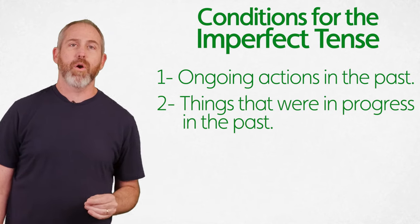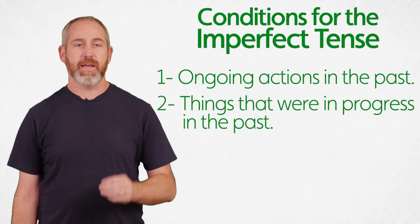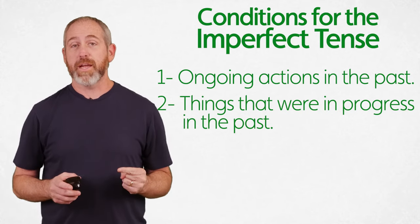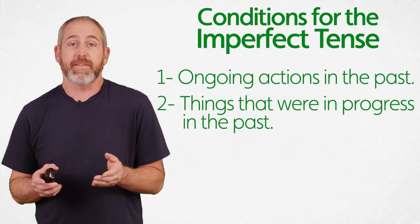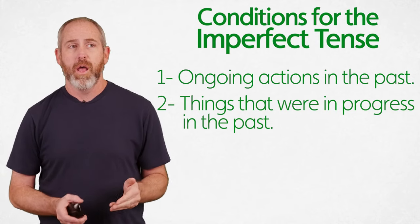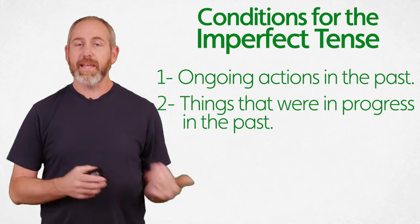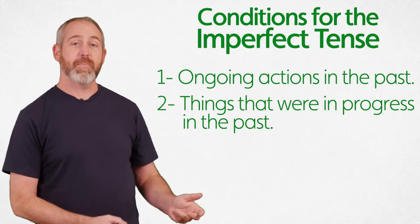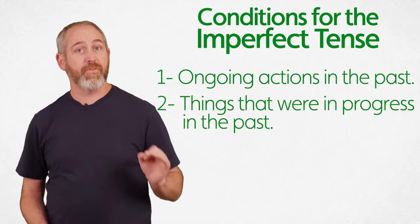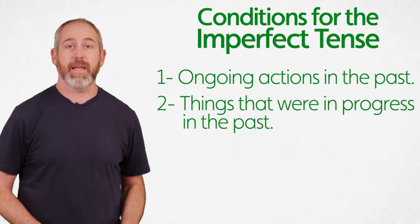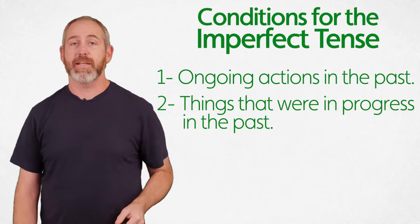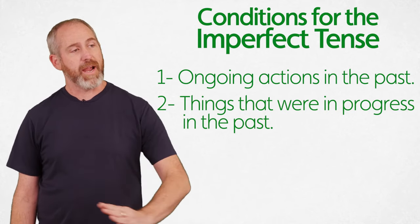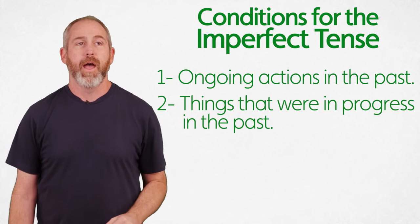Also, things that were in progress in the past. Remember present progressive, we covered that. Present progressive, it's progressing now. That's -ing, right? We use -ing to say I am studying, she is working. Well, think about things that were progressing in the past. I was studying, she was working. Those -ings in the past can be the imperfect tense. So they were practicing. That's imperfect. It was ongoing.